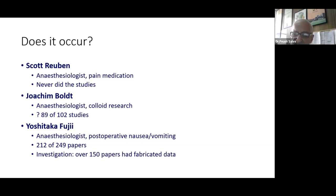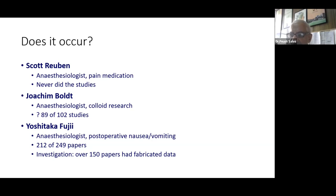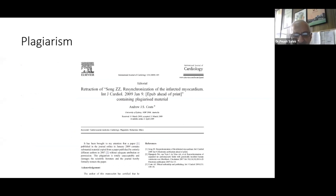Yoshitaka Fujii, an anesthetist who did a lot of work on postoperative nausea and vomiting, had 212 of his 249 papers investigated, and over 150 had fabricated data. A lot of us have heard of the phrase 'publish or perish,' but this behavior is far beyond that. To my mind, a person who goes on fabricating and falsifying data paper after paper is someone whose behavior is abnormal.